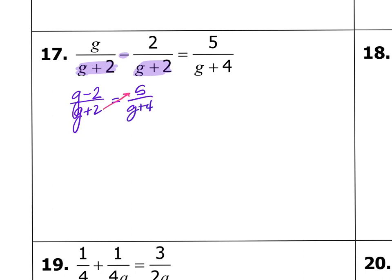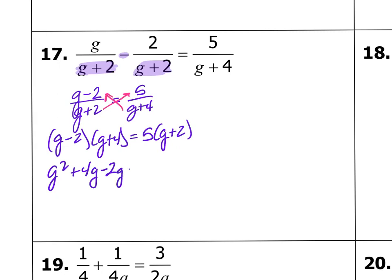And now I'm going to do what I did last lesson, which is cross multiply. So I get g minus 2 times g plus 4 equals 5 times g plus 2. Distribute. So g times g is g squared, g times 4 is 4g, negative 2 times g is negative 2g, and negative 2 times 4 is negative 8 equals 5g plus 10.